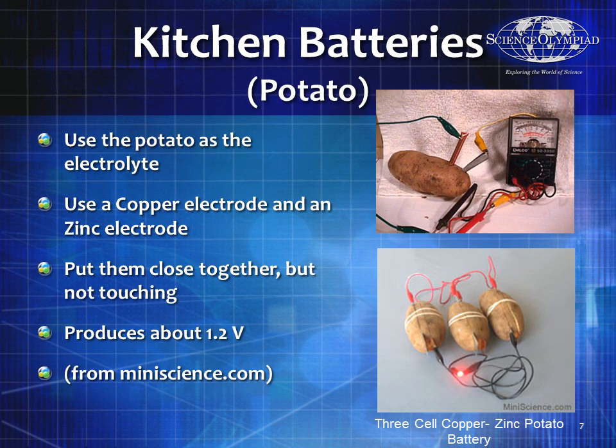You've probably all heard about potato batteries. The juice inside the potato acts as the electrolyte. In this case, we use a copper electrode and a zinc electrode — placed close together but not touching — and it normally produces about 1.2 volts. Here we've got three potatoes put in series, so if one potato gives about 1.2 volts, this would give about 3.6 volts — three in series, so each potato counts as a different cell.